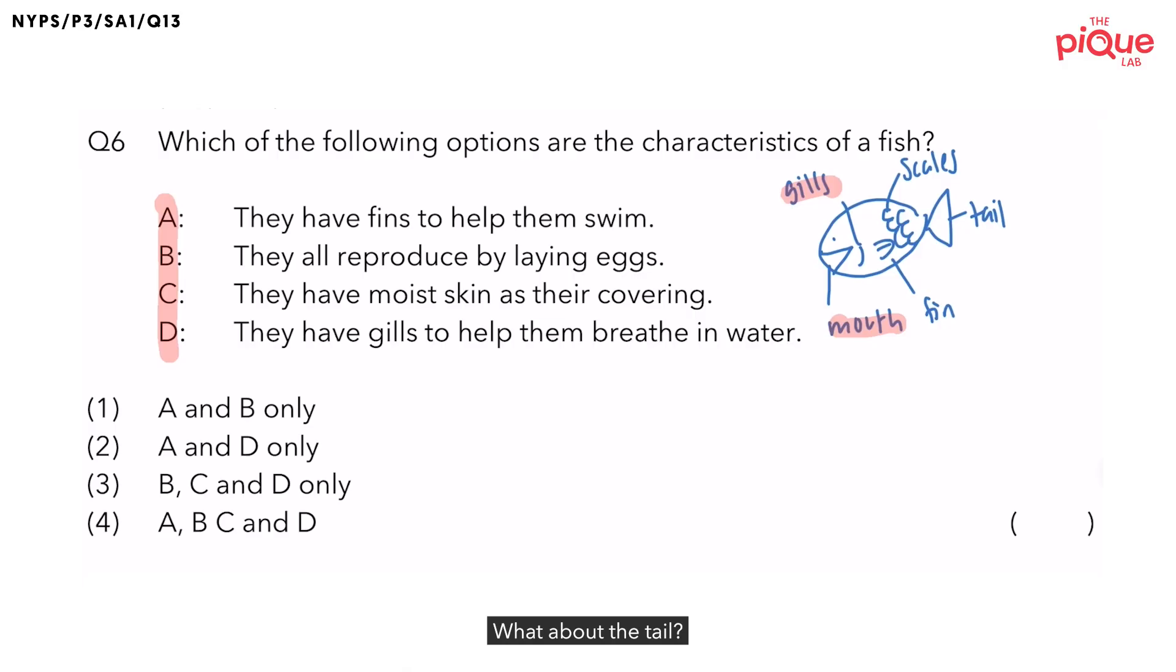What about the tail? The function of the tail is to help the fish to move forward and backward. In other words, it helps to propel the fish forward.